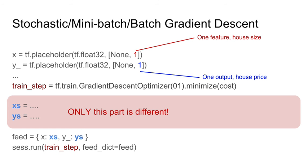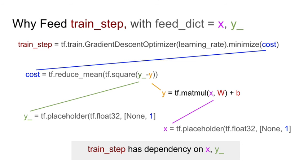The reason you need to feed in x and y_underscore values is that the train step relies on cost, which relies on y_underscore (the actual house price) and on y (the prediction). The prediction y depends on w, b, and x, where x comes from the actual data point. So the train step has a dependency on x and y_underscore as the data points, and you need to feed those in.